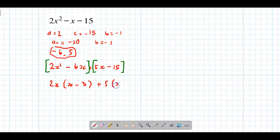The final part is to factorize by taking out the common bracket (x - 3) from both parts of the grouping, leaving (2x + 5).